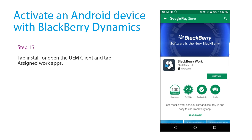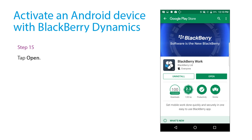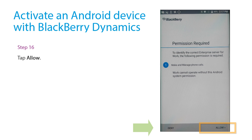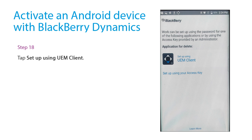To install BlackBerry Work, you can tap Install here, or open the UEM Client and tap Assigned Work Apps. Tap Open. Tap Allow three times. Tap Setup Using UEM Client.